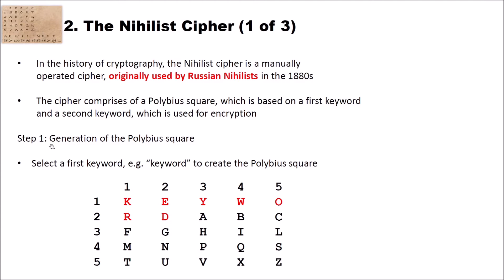The first step is the generation of the Polybius square. To do so, you first select the first keyword — for instance, 'keyword' — to create this. You write the keyword into the square and omit double letters. Conveniently, the keyword 'keyword' has no double letters. So you write k, e, y, w, o, r, d into the Polybius square, then fill the remaining positions with the rest of the alphabet. On the left side you write the digits 1 to 5, and on top of the columns also 1 to 5.